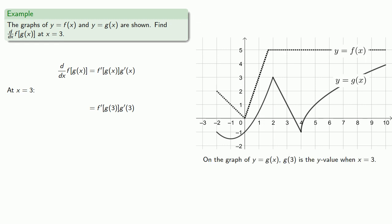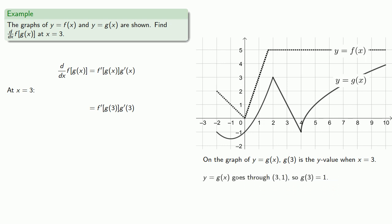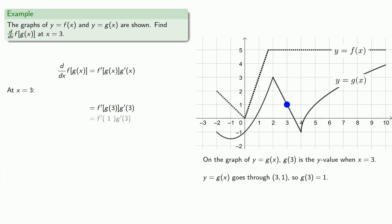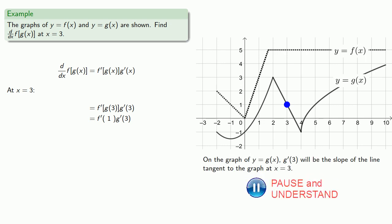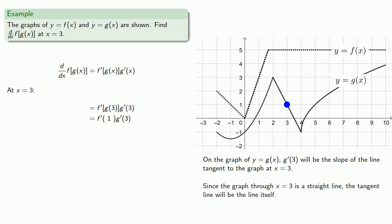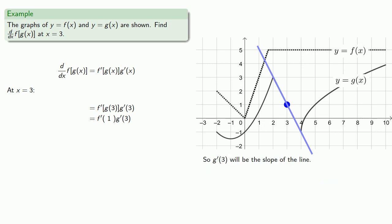On the graph of y equals g of x, g of 3 is the y value when x equals 3. We notice that y equals g of x goes through the point (3, 1). Also on the graph of y equals g of x, g prime of 3 is the slope of the line tangent to the graph at x equals 3. Since the graph at x equals 3 is a straight line, the tangent line is the line itself, and so g prime of 3 is the slope of that line, which is negative 2.